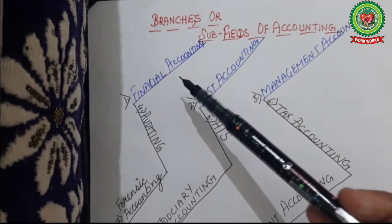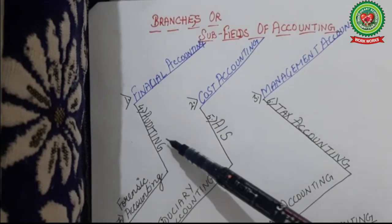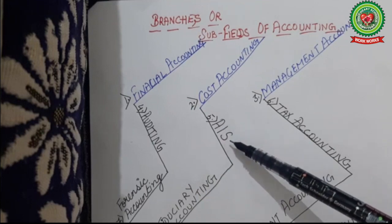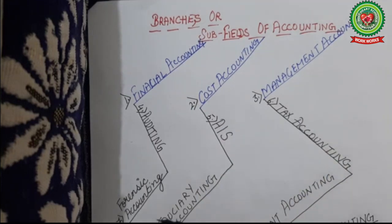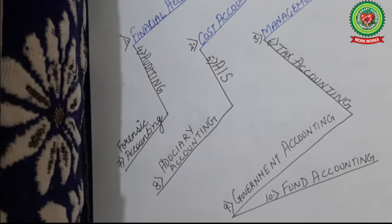The branches of accounting are: first, financial accounting; then cost accounting; management accounting; auditing; AIS — Accounting Information System; tax accounting; forensic accounting; fiduciary accounting; government accounting; and lastly fund accounting. A company dealing with a variety of products has to deal with a large number of fields of accounting as well, because in every field a new aspect needs to be investigated, presented, and collected.